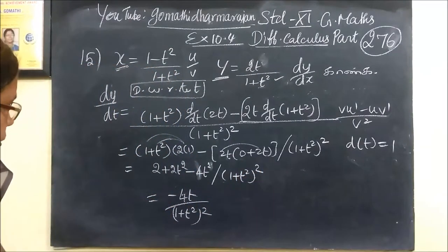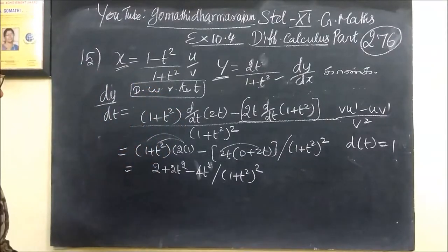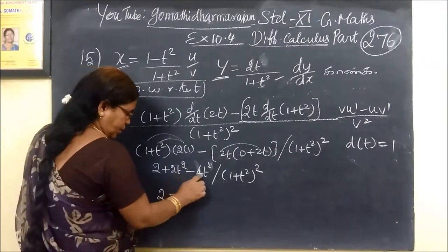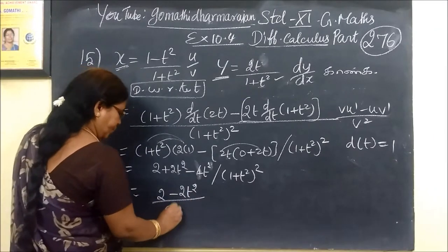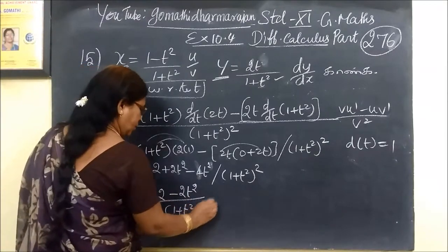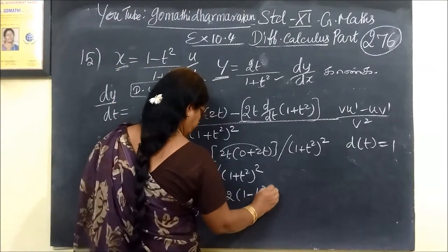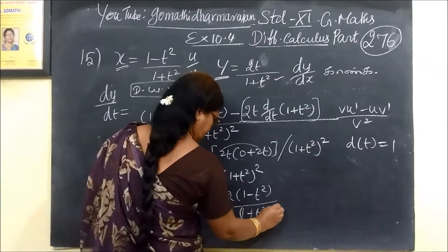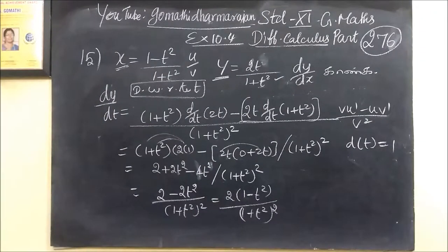These are up and down but we have to do this one: minus 4t by 1 plus t squared the whole square. So here we are going to get 1 minus 2t squared by 1 plus t squared the whole square. Take 2 common, so here we get 2 times 1 minus t squared by 1 plus t squared the whole square. So the answer for this one is correct.